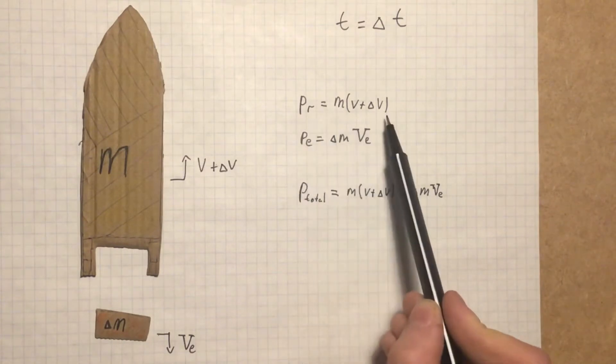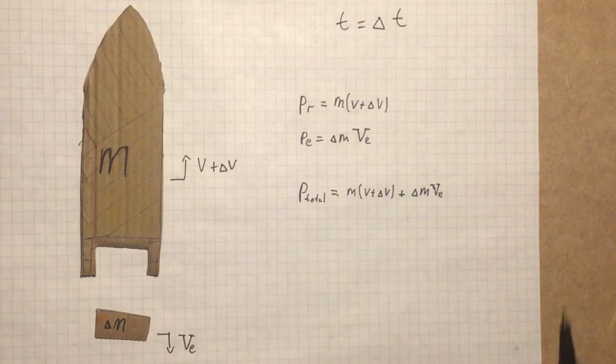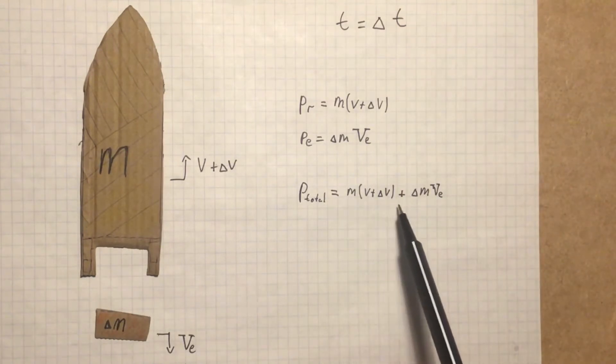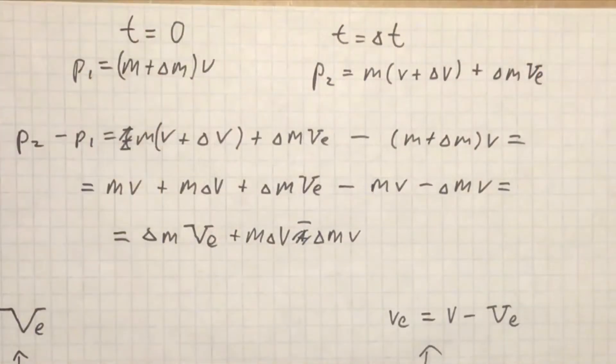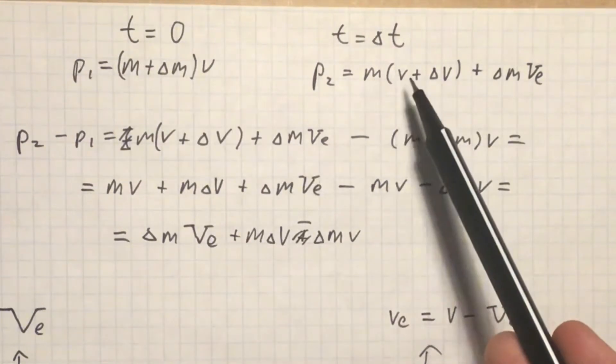Then, we can obtain momentum for the rocket and momentum for the exhaust. Using law of conservation of linear momentum, we get that total momentum of the system at time delta t is m multiplied by v plus delta v plus delta m multiplied by v_e. Now, we have momentums at time equals zero and at time equals delta t.